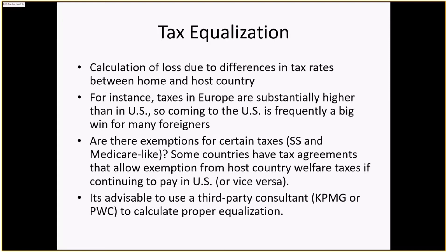For tax equalization, calculate the loss due to differences in tax rates between home and host country. European taxes are substantially higher than the US, so coming to the US is frequently a big win for most foreigners. Some companies have reciprocity tax agreements that allow exemption from host country welfare taxes if continuing to pay US taxes — for example, a UK employee continuing to pay UK national insurance taxes would be exempt from US Social Security and Medicare taxes. It's generally advisable to use a third-party consultant like KPMG or PwC to calculate proper equalization.